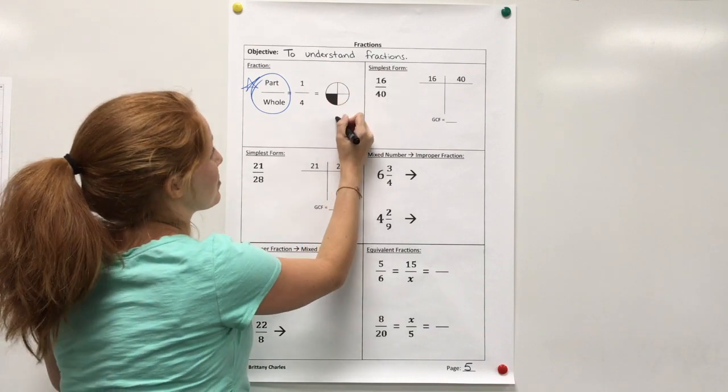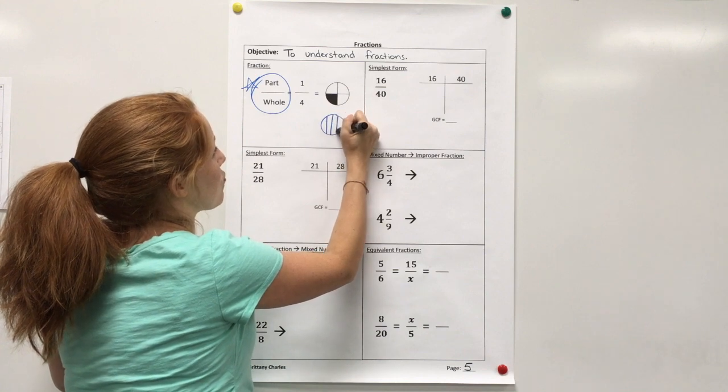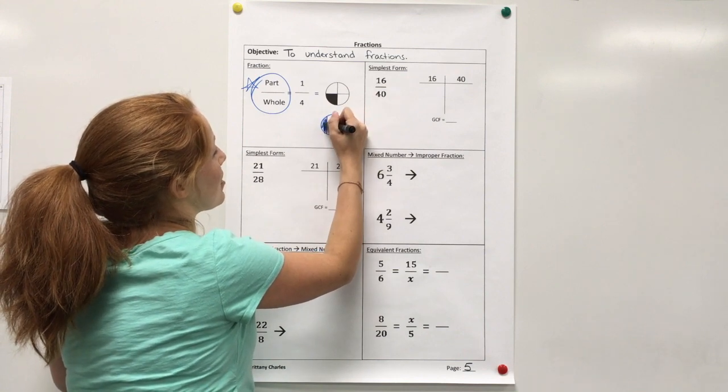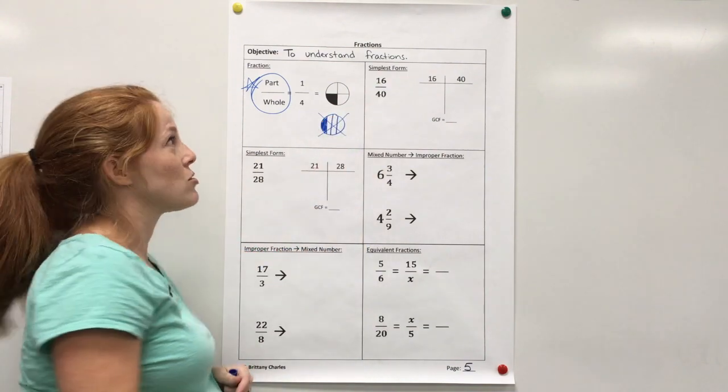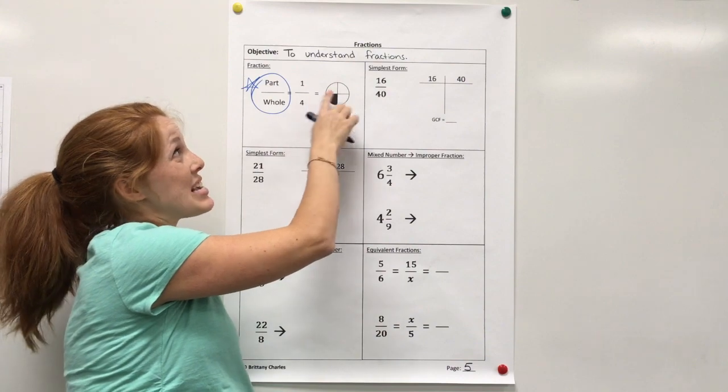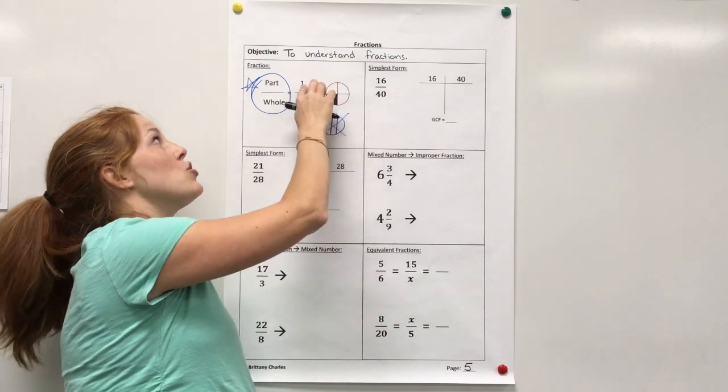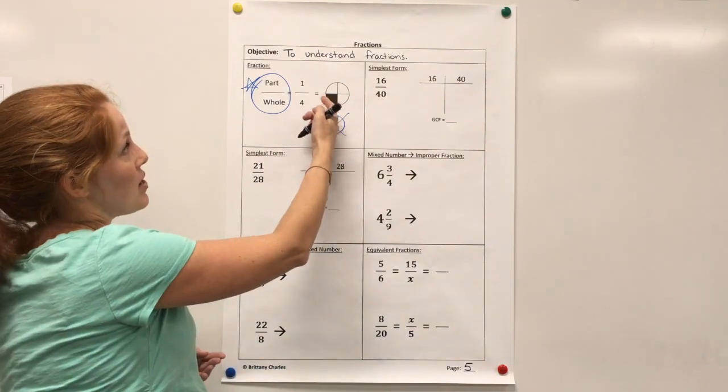Now I cannot have something like this. If I had a picture like this and it was in four pieces with one shaded, that is not one fourth because the parts are not equal. So it's really important that you realize the denominator shows the equal parts. And then the numerator shows however many you're talking about. In this case, one out of four.